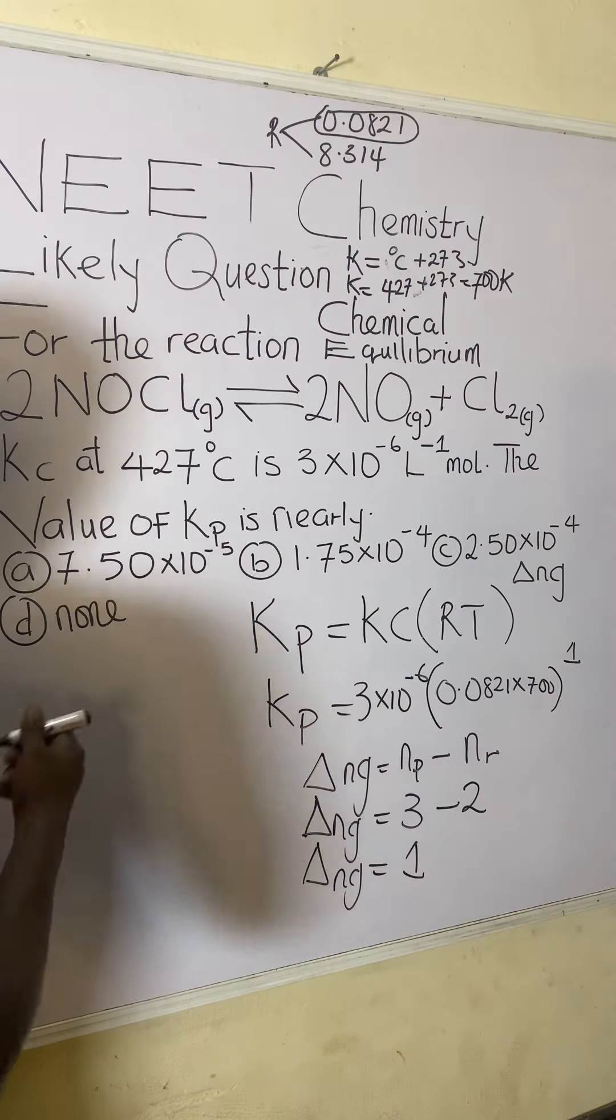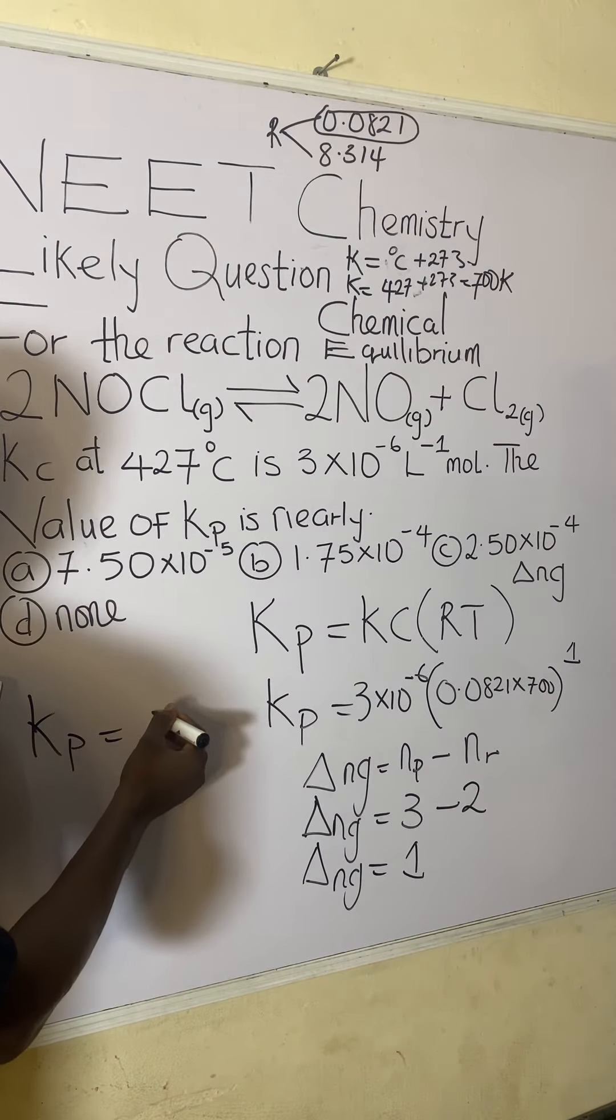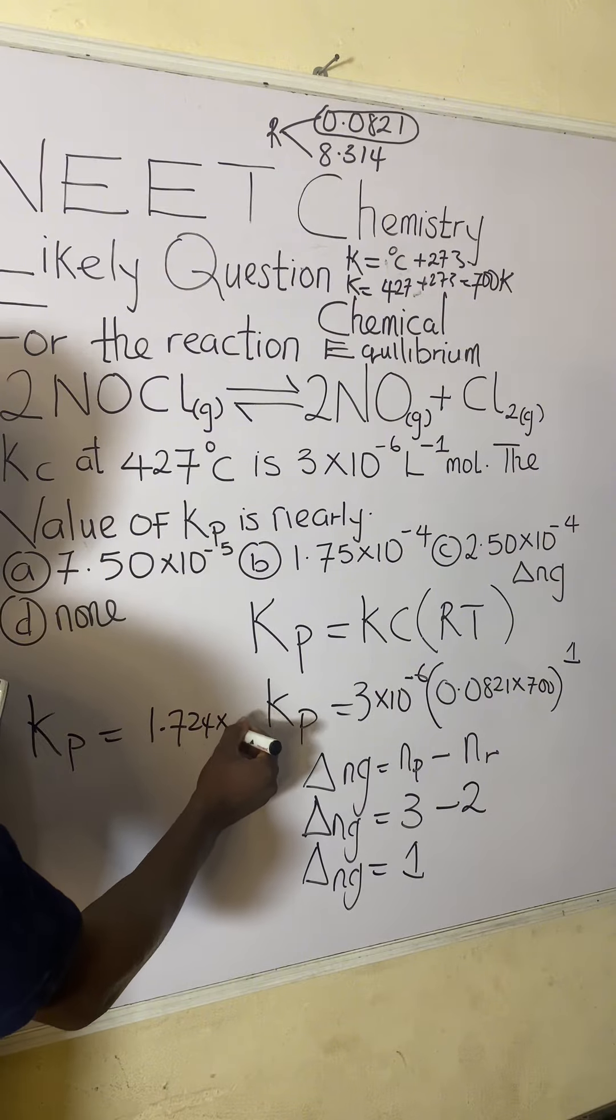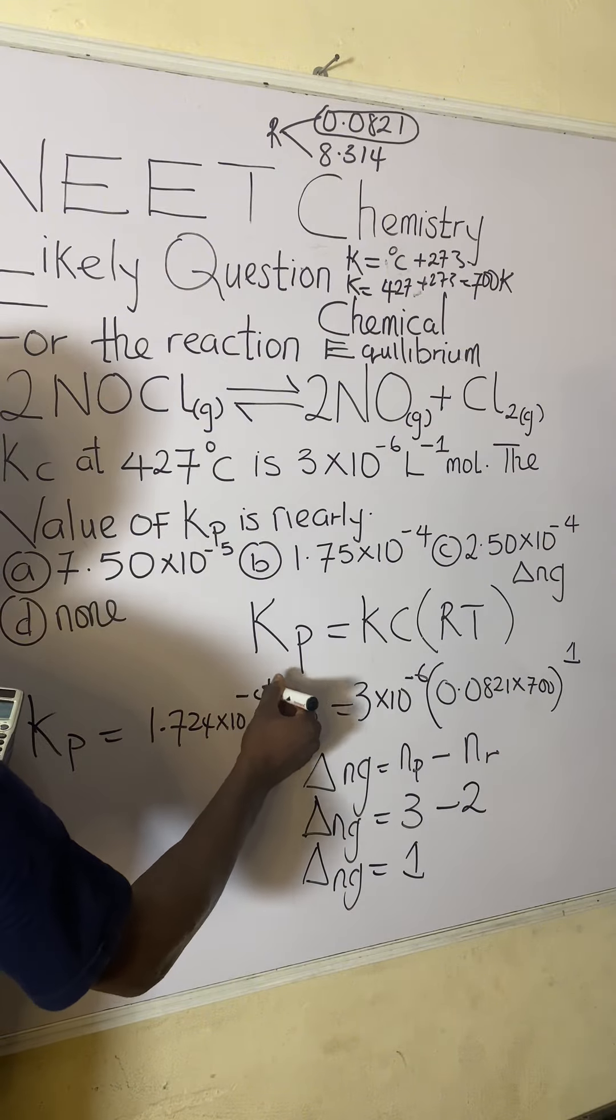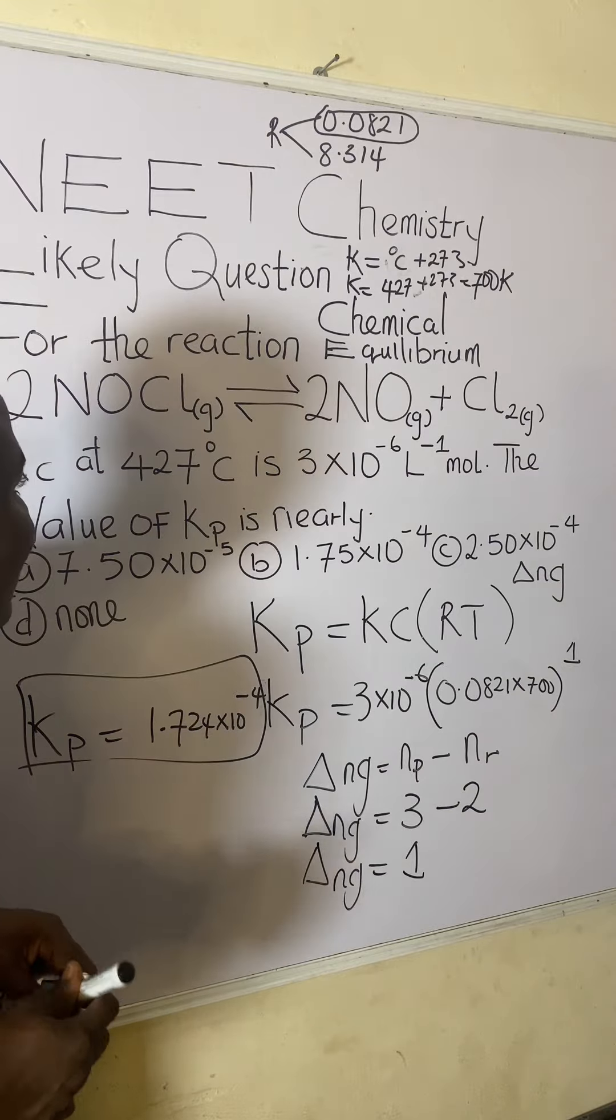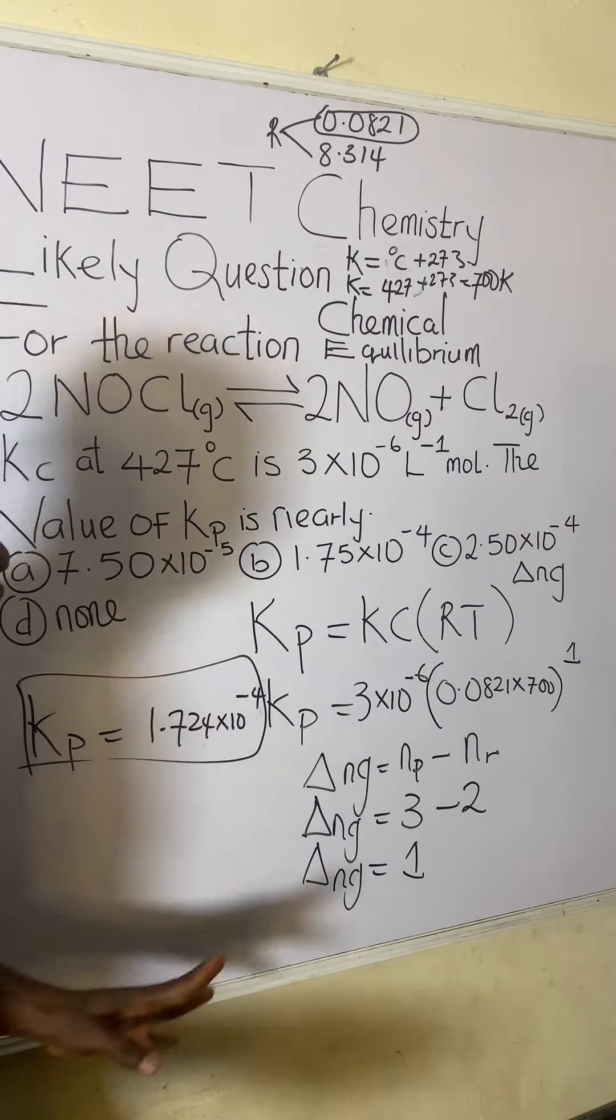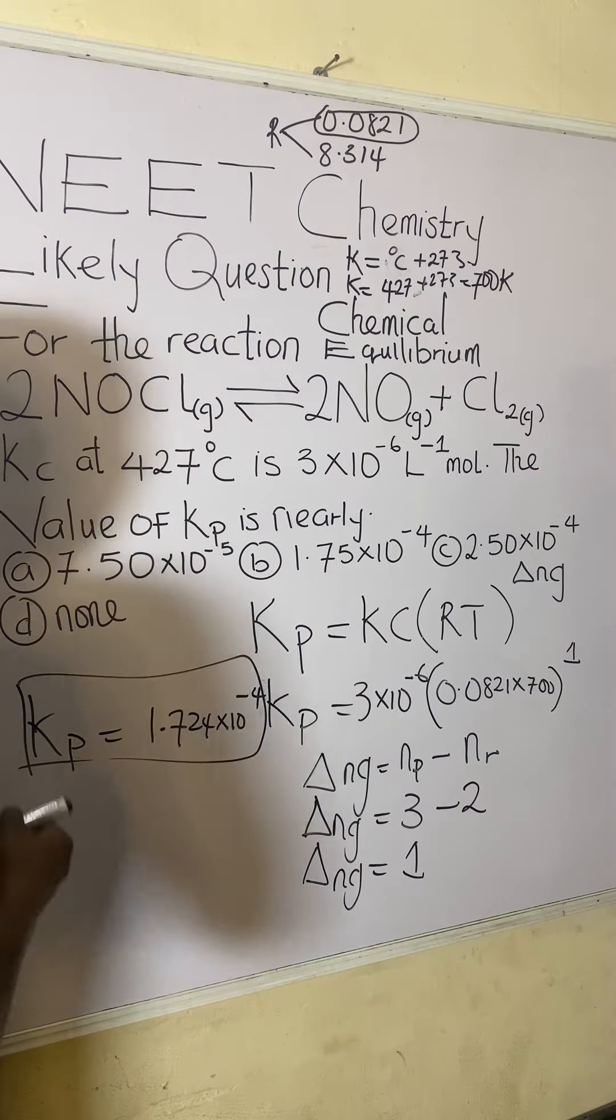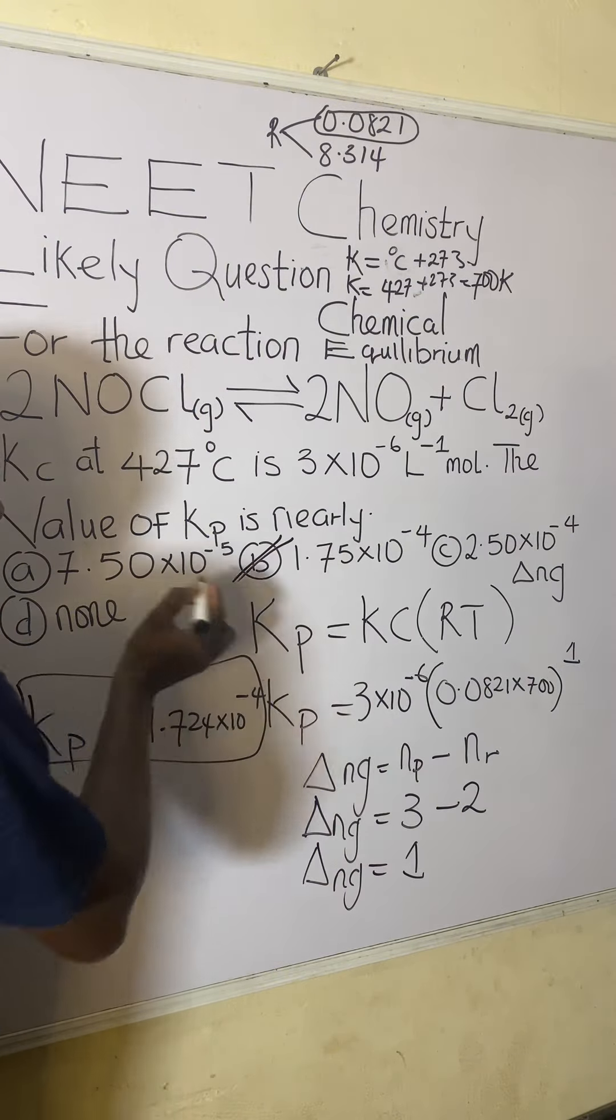So I had Kp to be 1.724 times 10 raised to power of minus four. I believe you are following. So this is the answer we got. And they said that the value for Kp is nearly, is nearly, this value is nearly what value? Option B is the answer to this question. It's actually very easy.